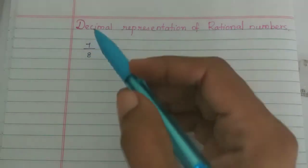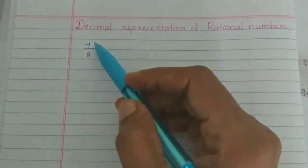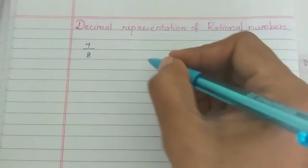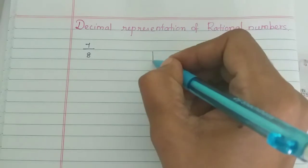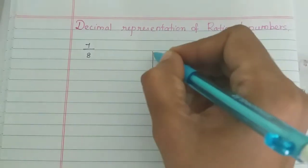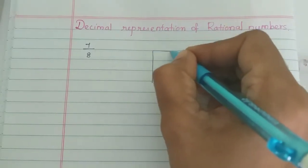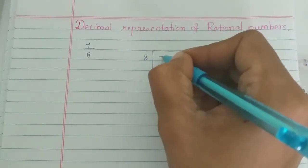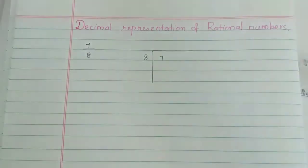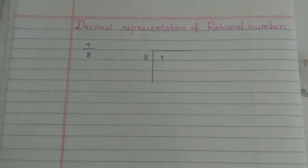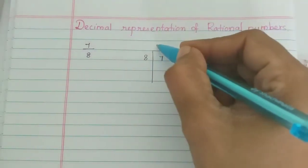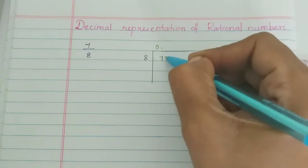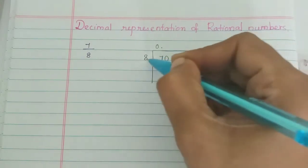For example, the first number is 7 divided by 8. Now, 7 is less than 8, so we have 0 point — we place a decimal point and proceed.